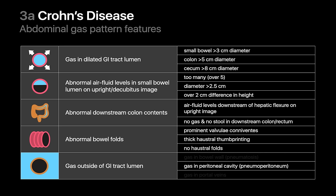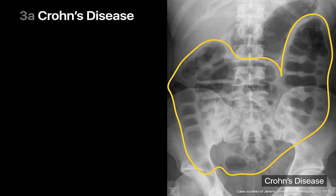Bowel perforation is a known complication of Crohn's disease, which can result in free gas in the peritoneal cavity. In effect, almost every single finding on the table may potentially present in an x-ray of a patient with Crohn's disease. In this example of Crohn's disease with colonic involvement, we can observe that the haustral folds of the colon are thickened and that a couple of dilated air-filled small bowel loops are also present in the mid-abdomen.